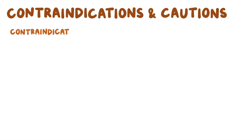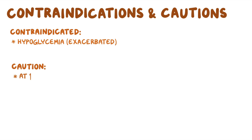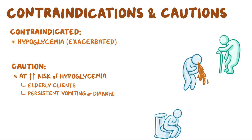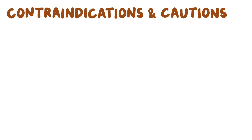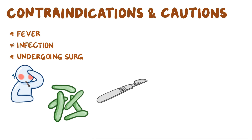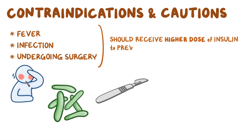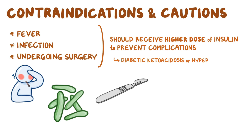Insulin is contraindicated in clients who have hypoglycemia, as it would be exacerbated. Caution should be taken with clients at higher risk of hypoglycemia, such as elderly clients, those with persistent vomiting or diarrhea, and clients with hepatic or renal disease. Precaution should also be taken in clients with a fever, infection, or undergoing surgery, as they should receive a higher dose of insulin to prevent complications like diabetic ketoacidosis or hyperglycemic hyperosmolar non-ketotic coma.